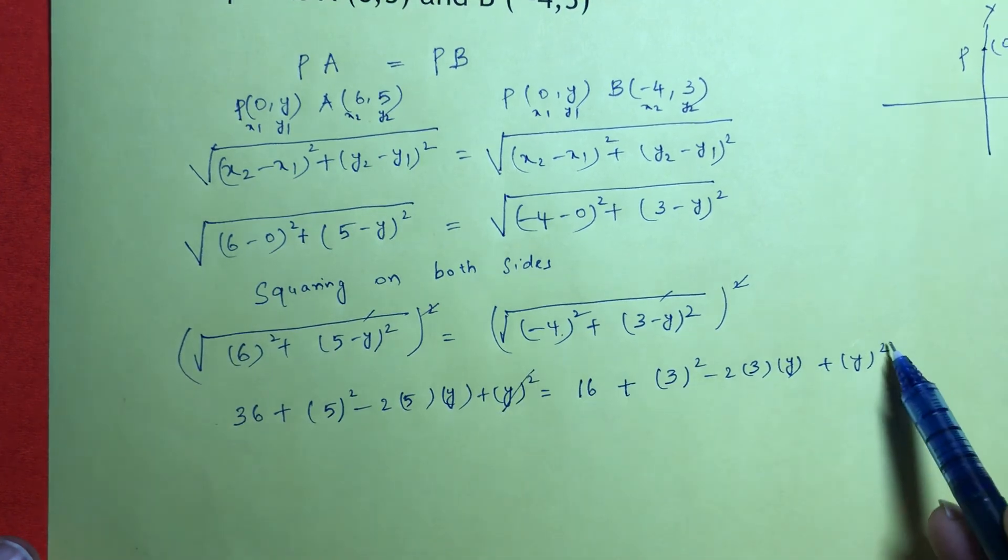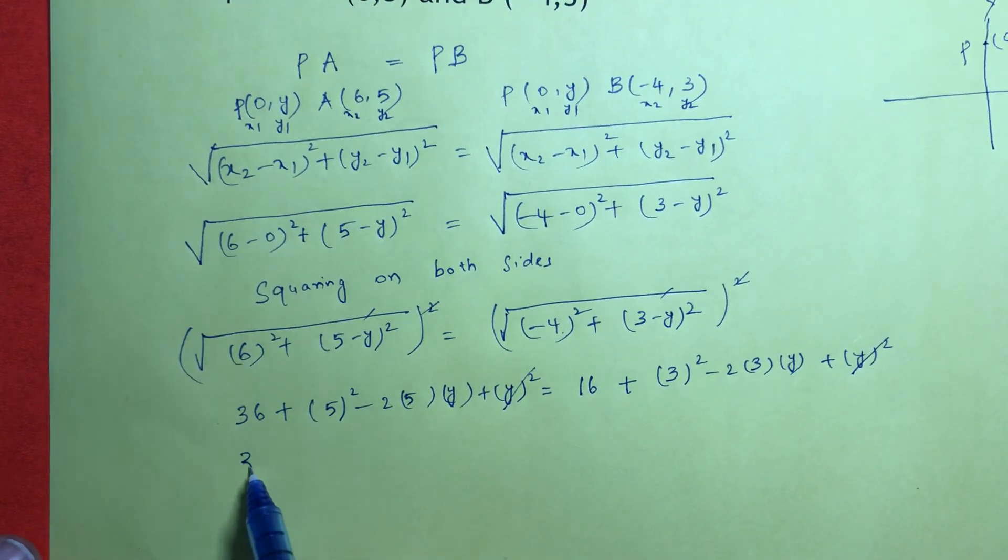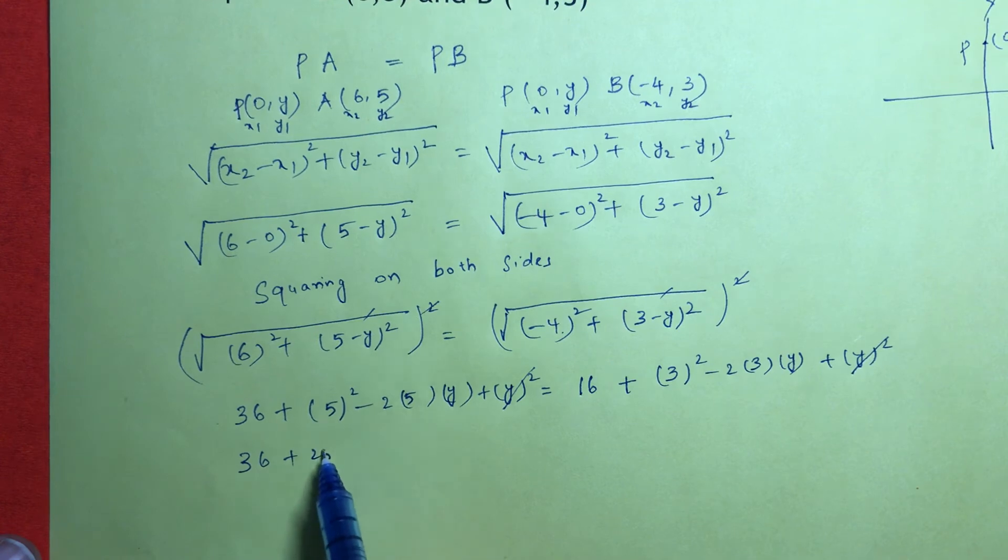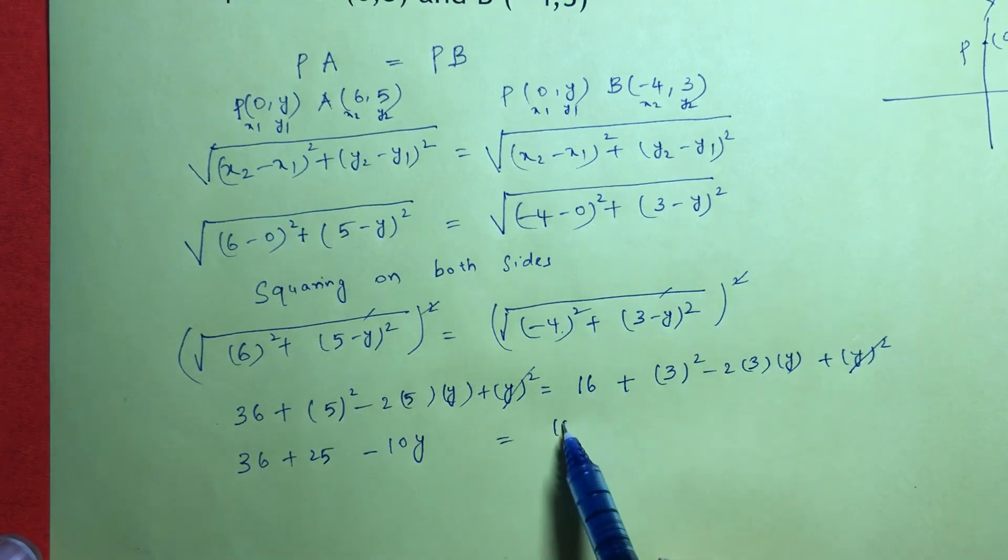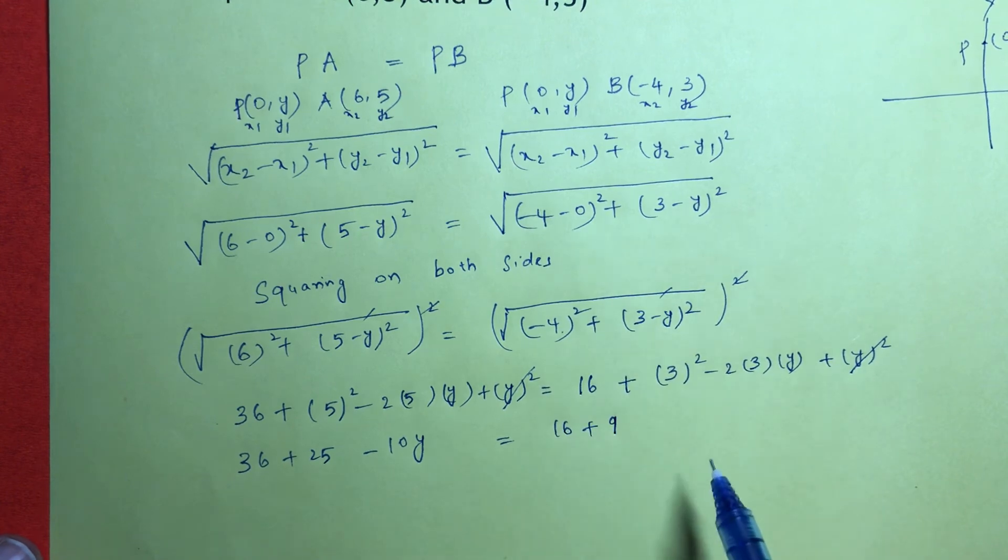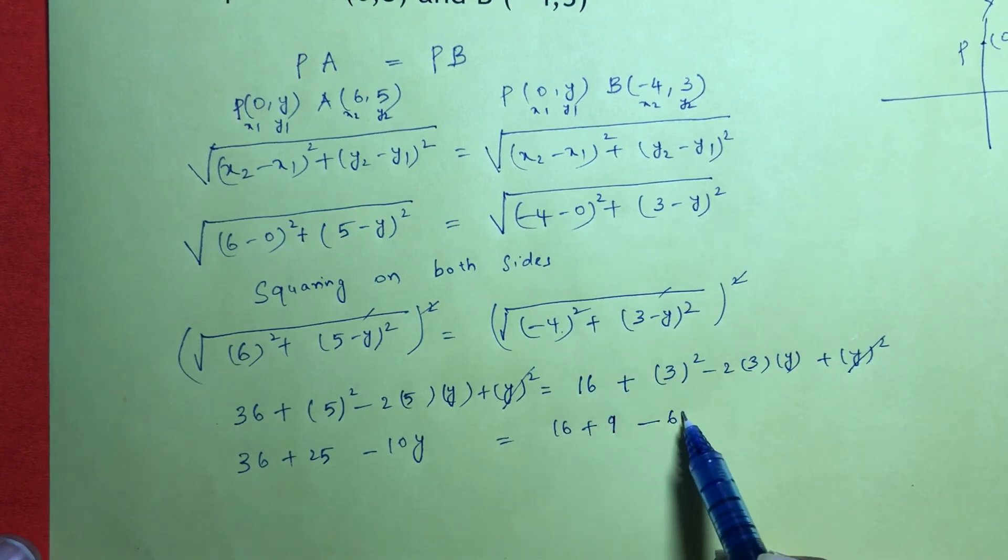Now y² will get cancelled. So 36 + 25 - 10y = 16 + 9 - 6y.